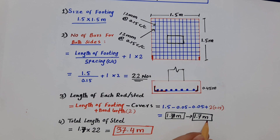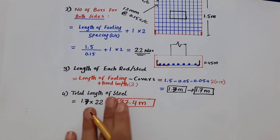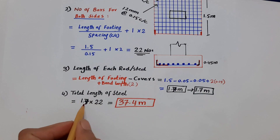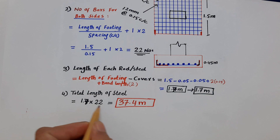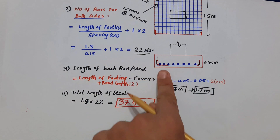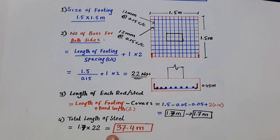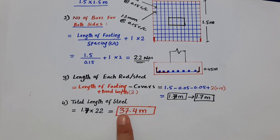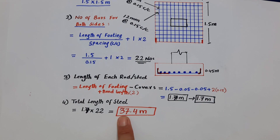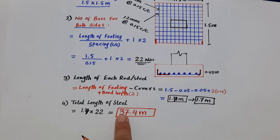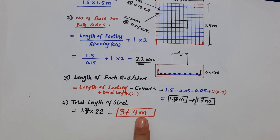Calculating: 1.5 − 0.05 − 0.05 + (2 × 0.15) = 1.7 meters per steel rod. The total length of steel is 1.7 meters multiplied by 22 rods, which equals 37.4 meters. That is the total steel length required for this footing.